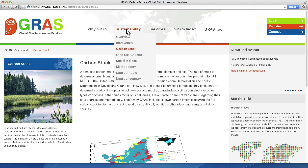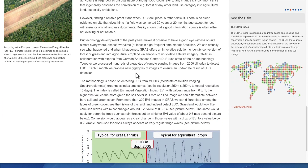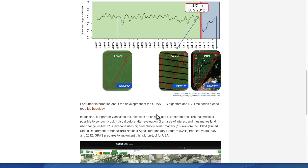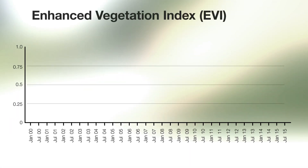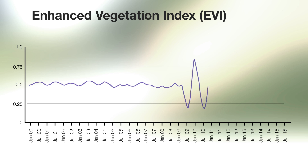The visualization of land use change activities is one of the most powerful features GRASS has to offer. GRASS uses images from different satellite sensors. MODIS satellite signals are processed to generate the so-called Enhanced Vegetation Index, or EVI. The EVI is an indicator for the greenness of an area. The higher the value, the more green or the more canopy cover an area contains.